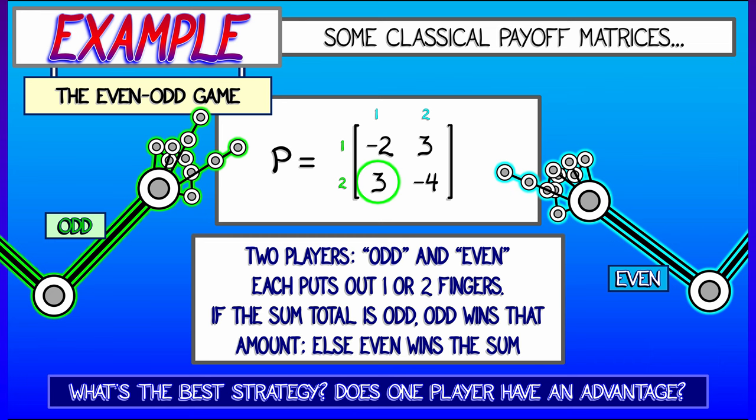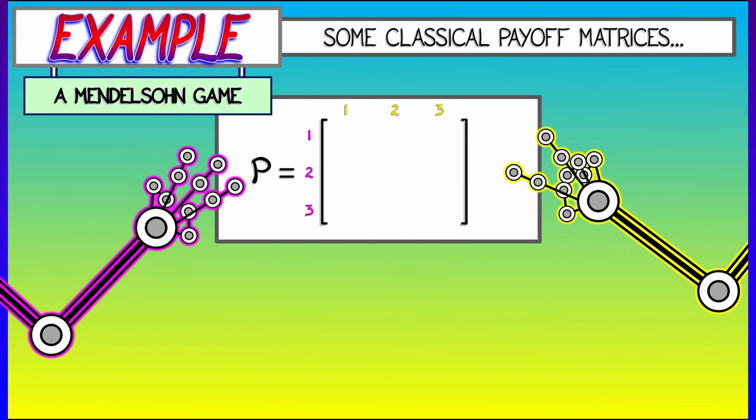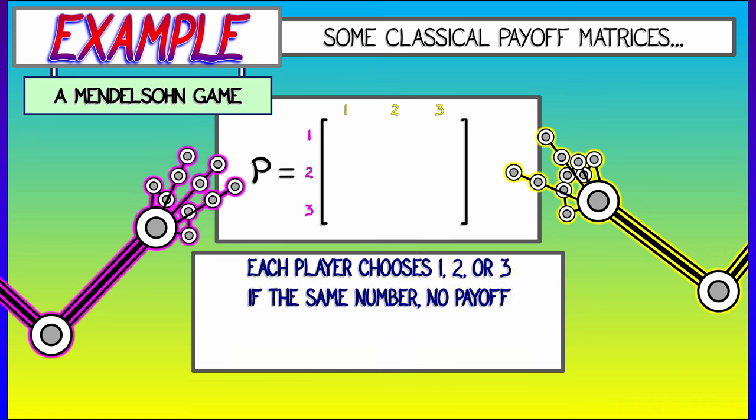Well, this case still is not as complicated as it gets. Here is something called a Mendelssohn game, where now each player chooses either one, two, or three, and puts out that many fingers.